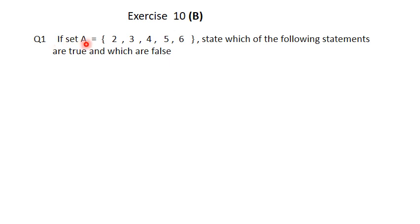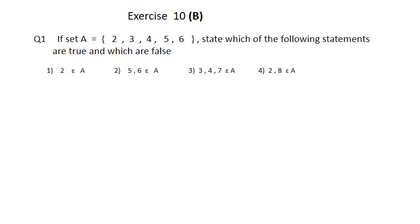Let us solve Exercise 10. Question 1: If set A = {2, 3, 4, 5, 6}, state which statements are true or false. First: 2 ε A. Since 2 is present in set A, this statement is true - element 2 belongs to the given set A.